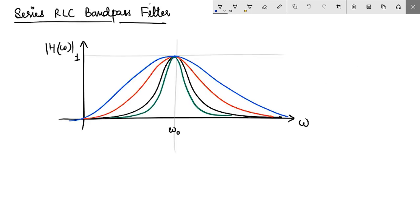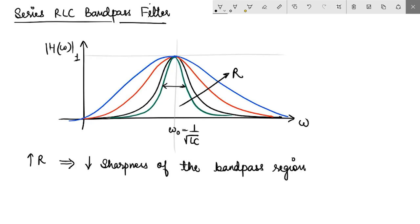We would notice that for the same resonant frequency, that means the same value of L and C, as you go on increasing the value of R, the width of the bandpass region goes on increasing. That means increasing the value of R in this kind of a circuit actually leads to decrease in the sharpness of the bandpass region, or rather increase in the bandwidth. For a bandpass filter, if we want to restrict a very limited range of frequencies to pass through this filter and suppress all the others, we need that the resonant peak should be very sharp.